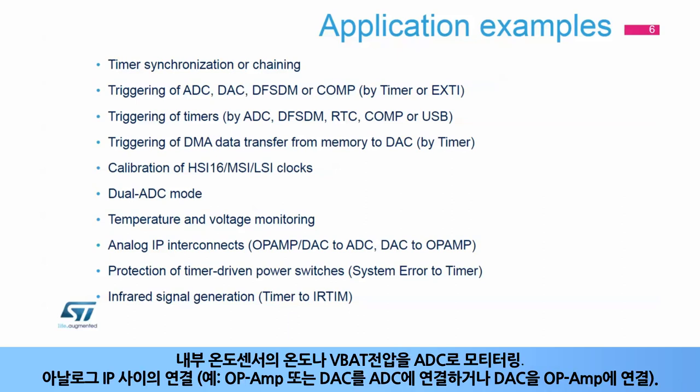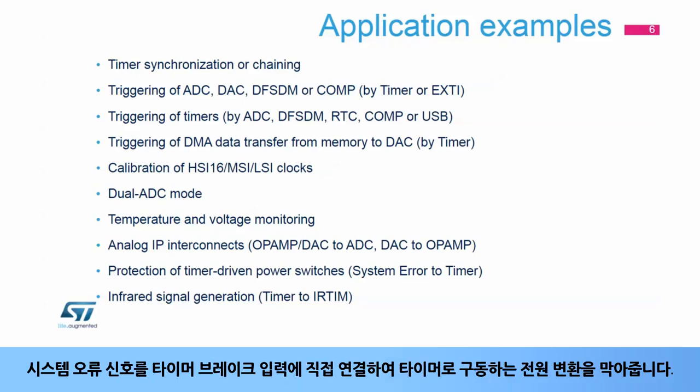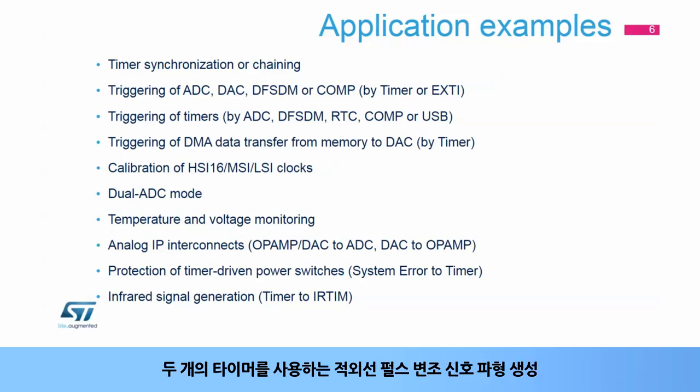Monitoring the temperature of a connected internal temperature sensor or the VBAT to ADC voltage. Analog IP interconnects — for example, connecting an op-amp or DAC to an ADC, or a DAC to an op-amp. Protecting timer-driven power switches through the direct connection of system error signals to the timer brake input. And infrared pulse modulation signal waveform generation using two timers.